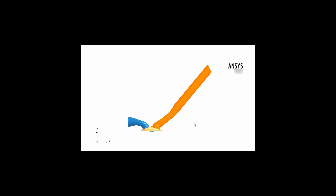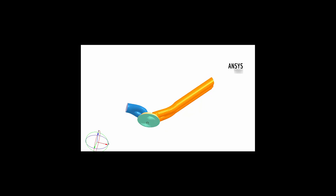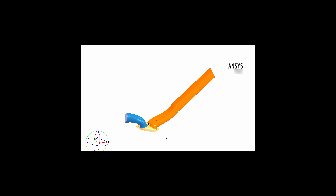For this example, I have a port injected spark ignition internal combustion engine with moving valves loaded into ANSYS Forte. Here we can see the intake manifold, the exhaust manifold, the head, and the piston. Within each manifold, the intake and exhaust valves are seated.